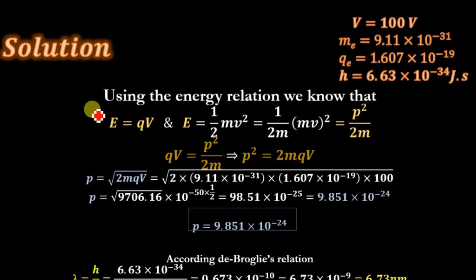Using the energy relation we know that the energy E = qV, which is actually electron volt, is the equation for energy of electron. And we also know that the energy is equal to 1/2 mv² (kinetic energy). Dividing and multiplying this equation by m, we get 1/2m × (mv)², and mv = p, where p is the momentum. So energy E = p²/2m.